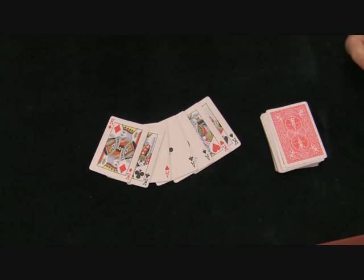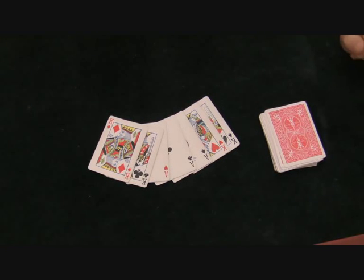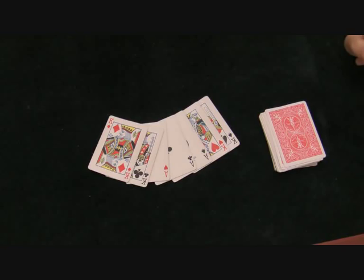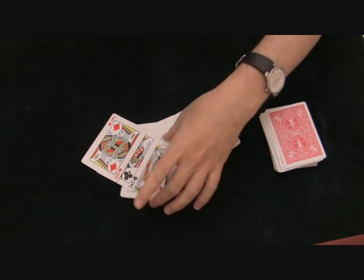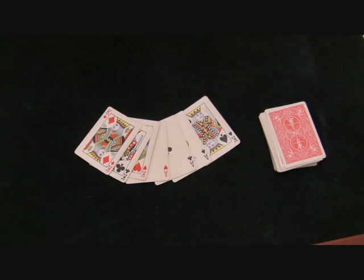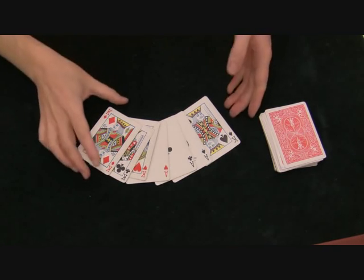One more tip from me. You can use the single buckle move also for showing four cards instead of more cards. For example, you have six cards but you only want to show five, four cards. It's the same.